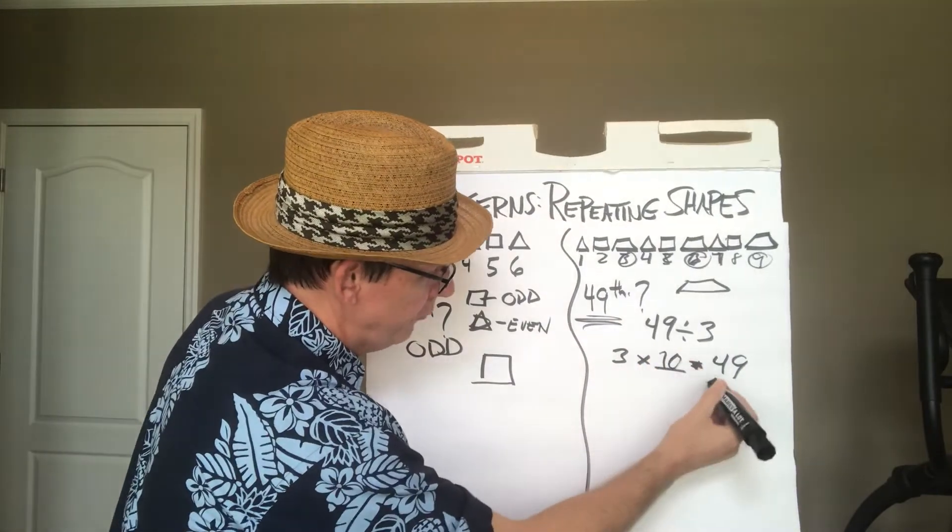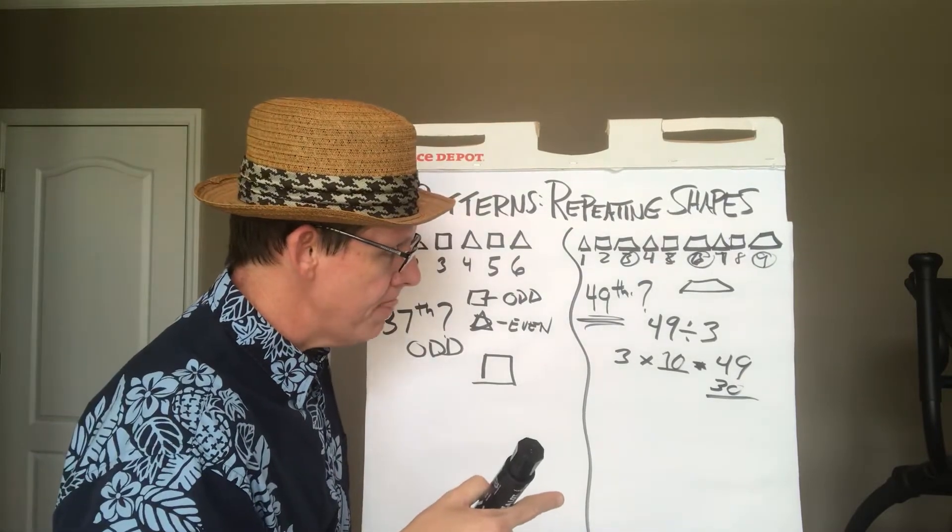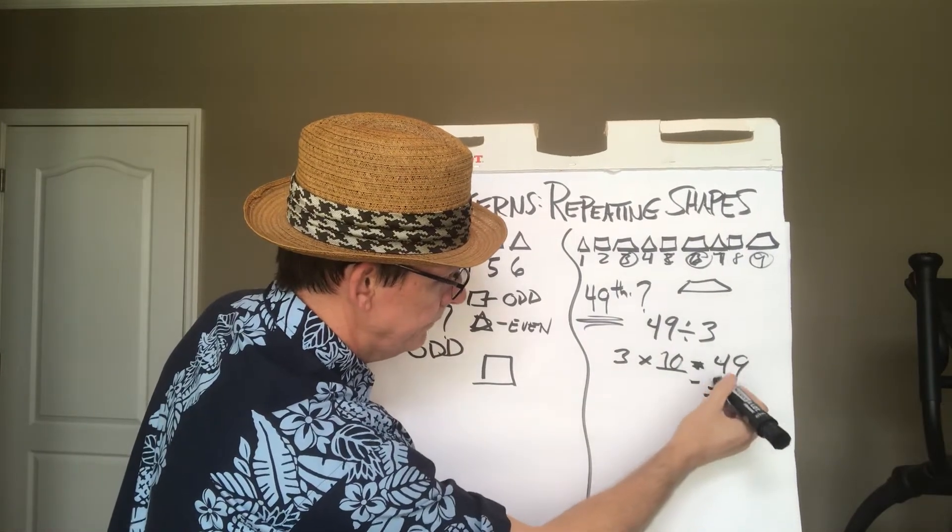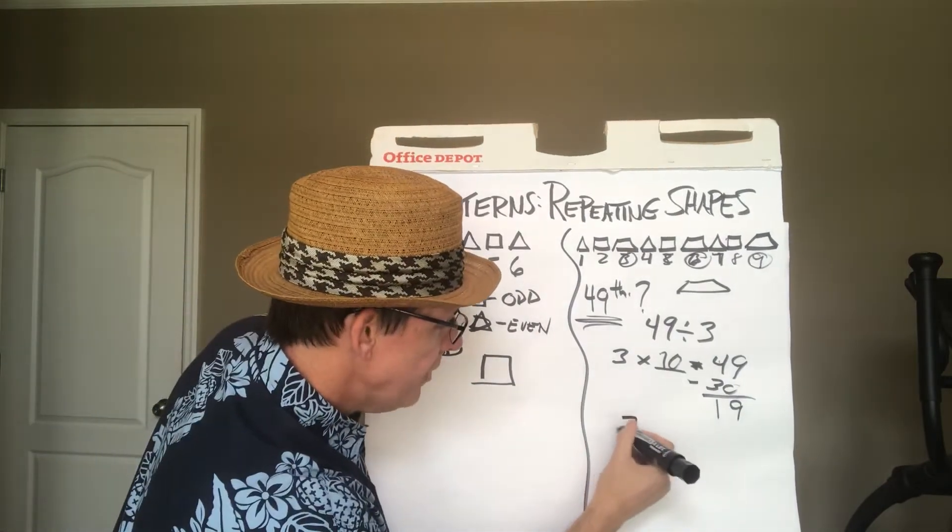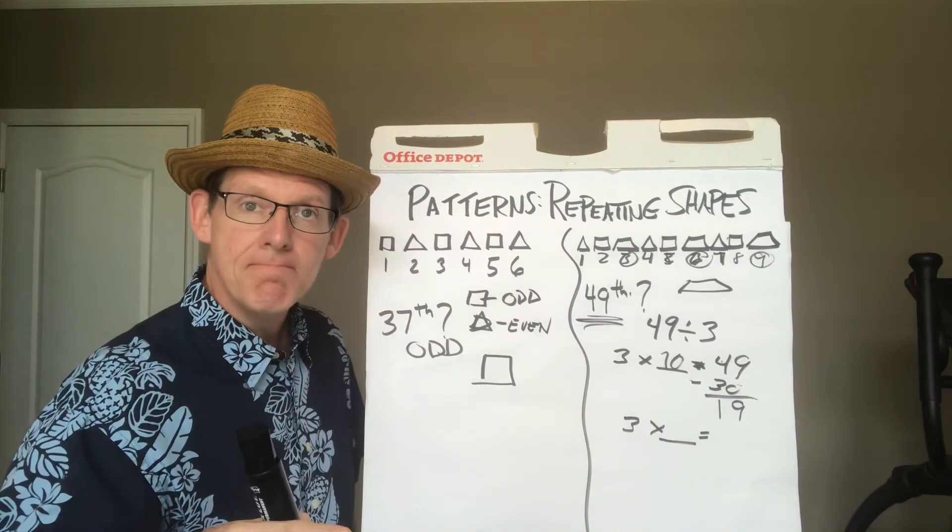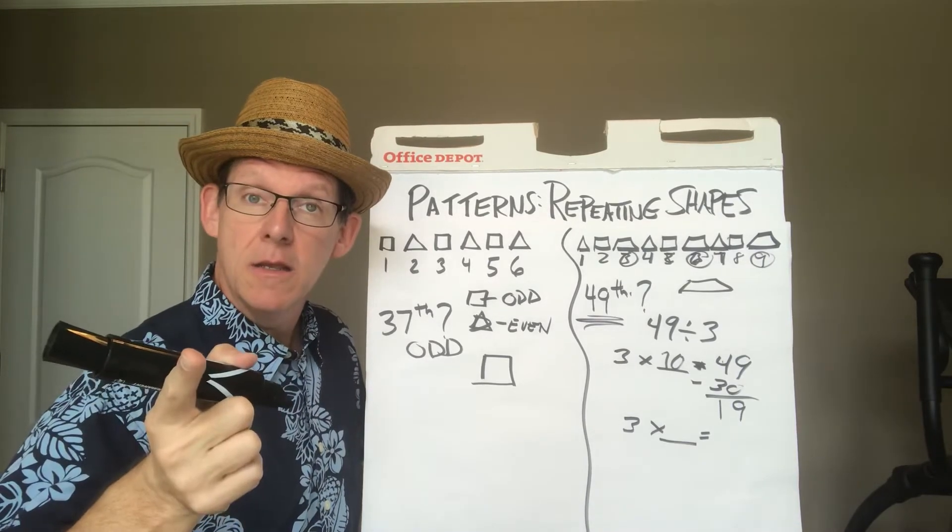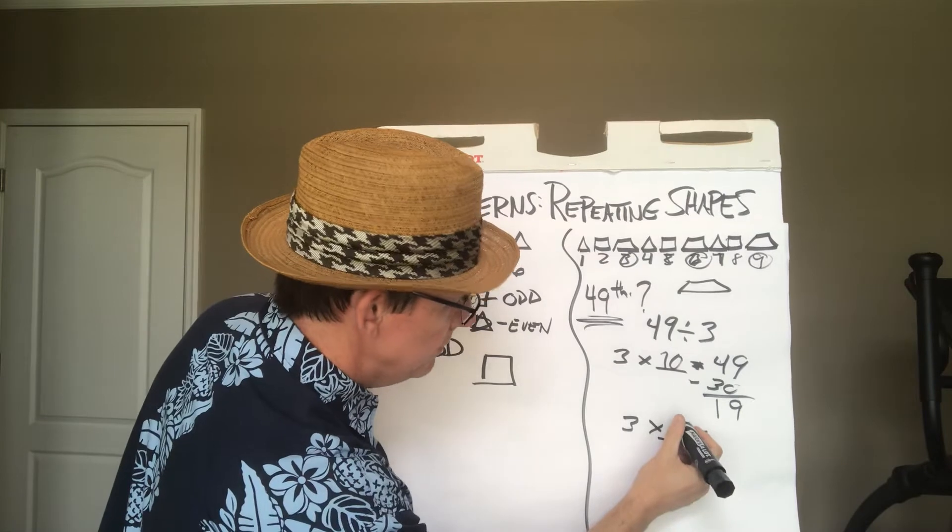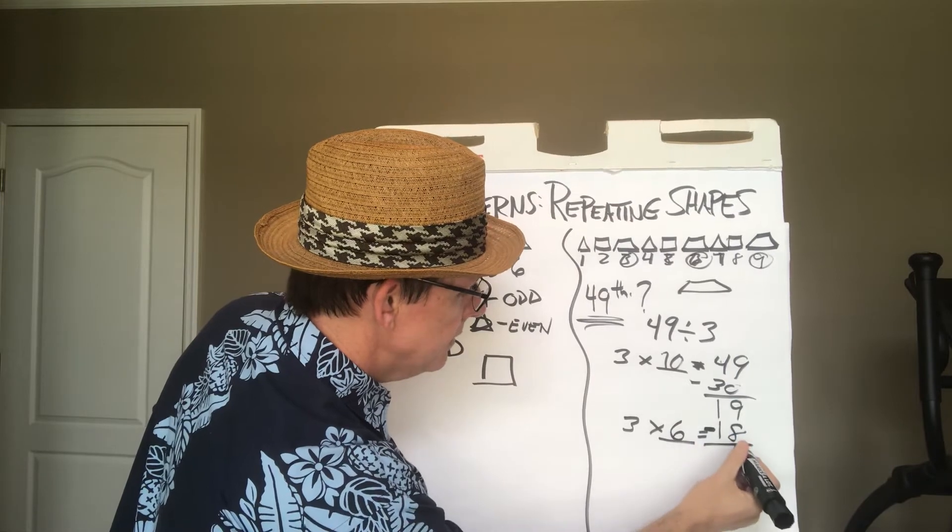Let's try three times 10. Three times 10 is 30. That's not exactly it, but we're getting closer. And that is, oh, I need to subtract next, don't I? I go to subtract and that gets me 19. Can I do that again? Three times what gets me close to 19? That's right. Can I get exactly 19? No. But I can get close. I can say three times six. Three times six is 18. And I subtract and I get one.